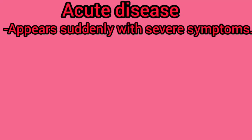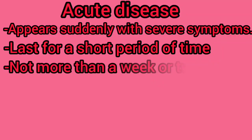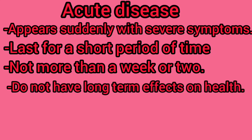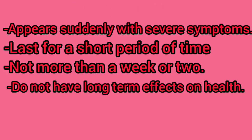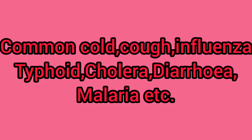Diseases are of two types: acute disease and chronic disease. Acute disease na suddenly appear hote hain, kuch severe symptoms ke saath, aur bahut thode samay ke liye hamare shareer mein rehte hain. They appear suddenly, produce severe symptoms, and last for a short period of time — not more than a week — and do not have long-term effect on health. Examples: common cold, influenza, typhoid, cholera, diarrhea, malaria, etc.